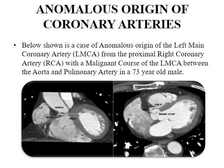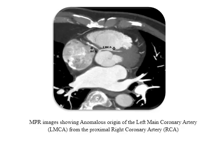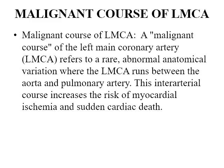The anomalous origin case shown demonstrates the left main coronary artery arising from the proximal right coronary artery with a malignant interarterial course between the aorta and the pulmonary artery. The malignant course of the left main coronary artery refers to a rare abnormal anatomical variation where it runs between the aorta and the pulmonary artery. This interarterial course increases the risk of myocardial ischemia and sudden cardiac death.